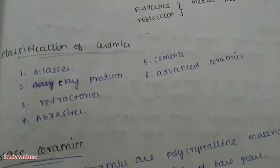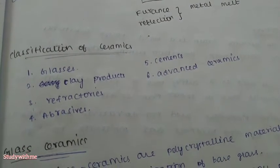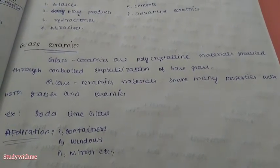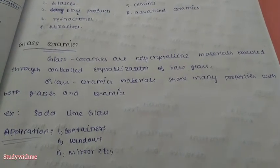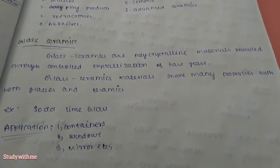The classification of ceramics includes: classic clay products, refractories, abrasives, cements, and advanced ceramics. Glass ceramics is also a class — it is a crystalline material produced through the controlled crystallization of a base glass. Glass ceramics share many properties with both glasses and ceramics.